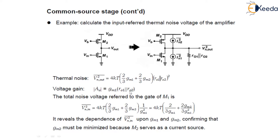The total noise voltage referred to the gate of M1 can be given by: Vn_in squared equals Vn_out squared divided by the gain. Dividing both terms by the gain squared, we get 4KT times (2/3 GM1 plus 2/3 GM2) divided by GM1 squared.